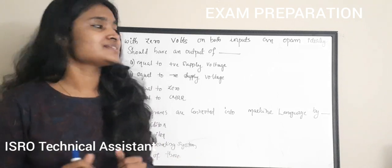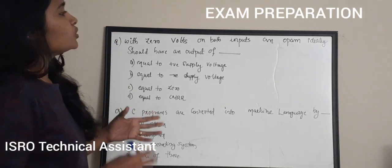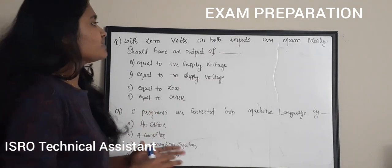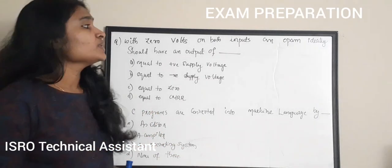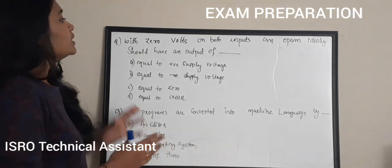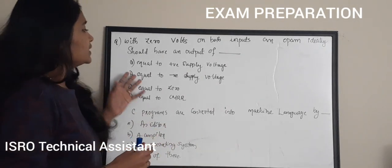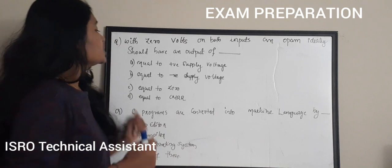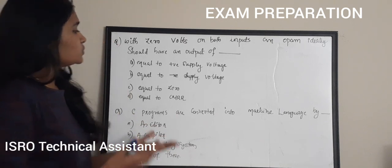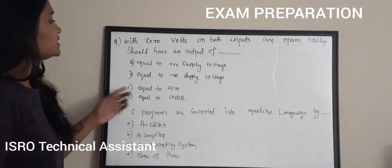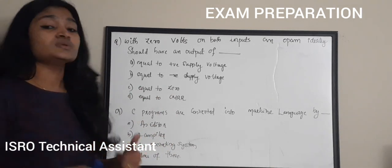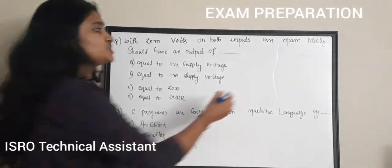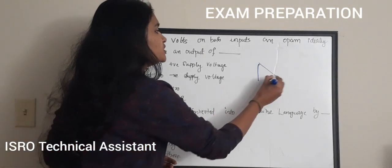The first question: with zero volts on both inputs, an op-amp ideally should have an output of dash. The options are: A) equal to positive supply voltage, B) equal to negative supply voltage, C) equal to zero, and D) equal to CMRR.